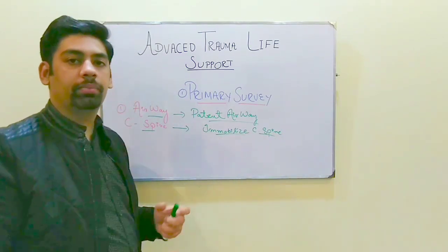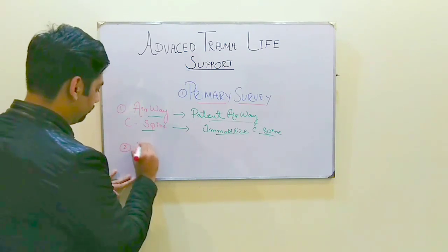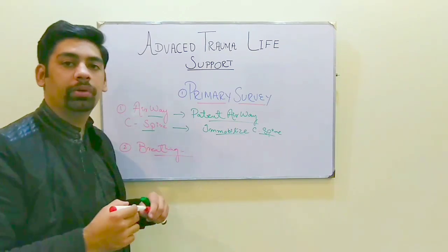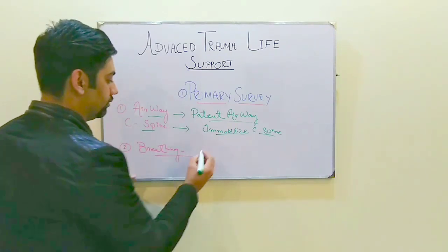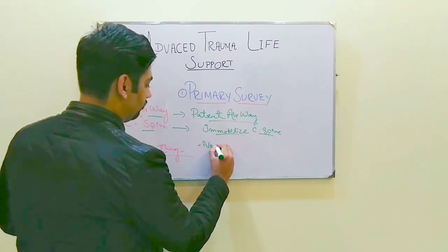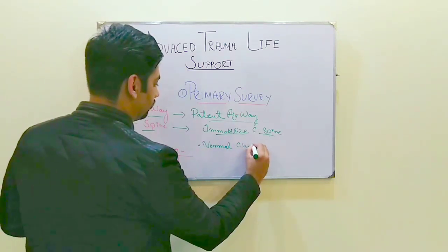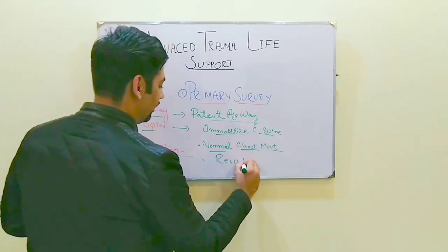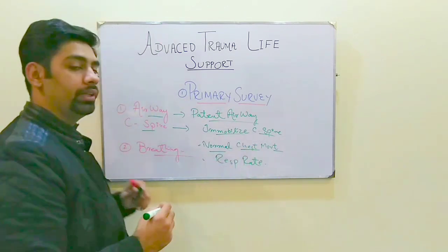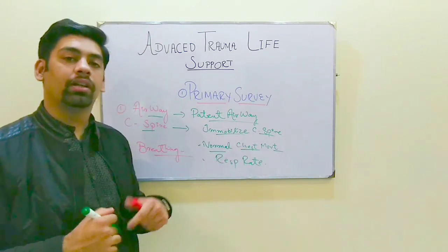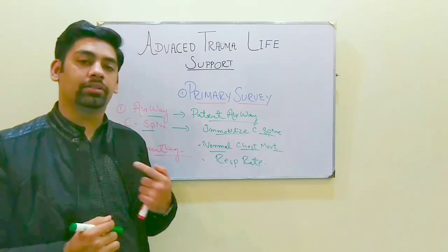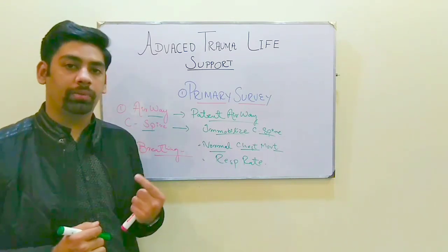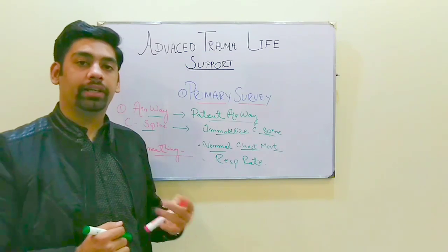The second component in the primary survey is breathing. In this component, we look for normal chest movements, chest expansion, and the respiratory rate. This can give us an indication of any breathing problem which the patient might suffer after a traumatic injury.